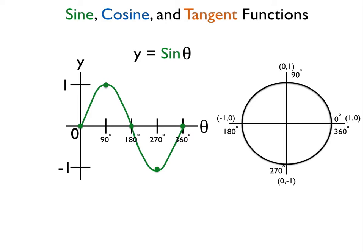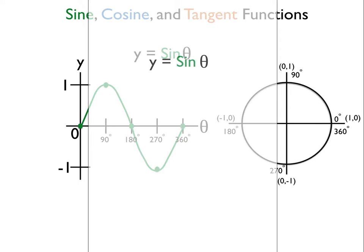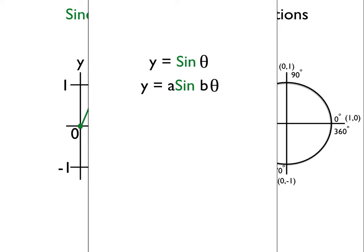What you see there on the left is the parent function of a sine graph, and I'm going to show you how this sine graph relates to our unit circle that we've memorized. This is the parent function which is y equals a sine times b theta. Our a represents the amplitude and our b is used to find the period or the full cycle of our graph.